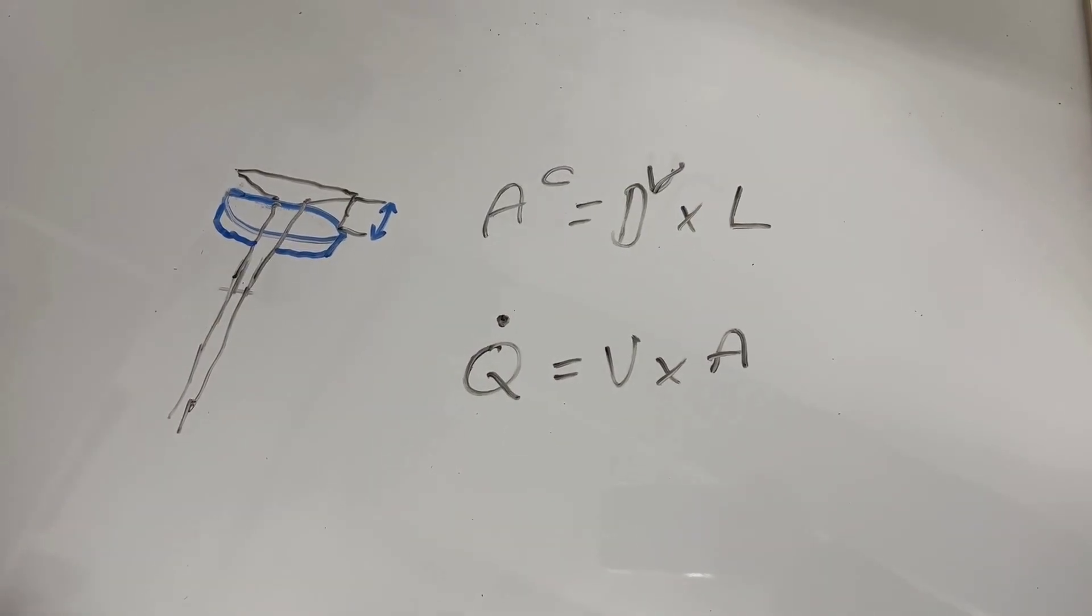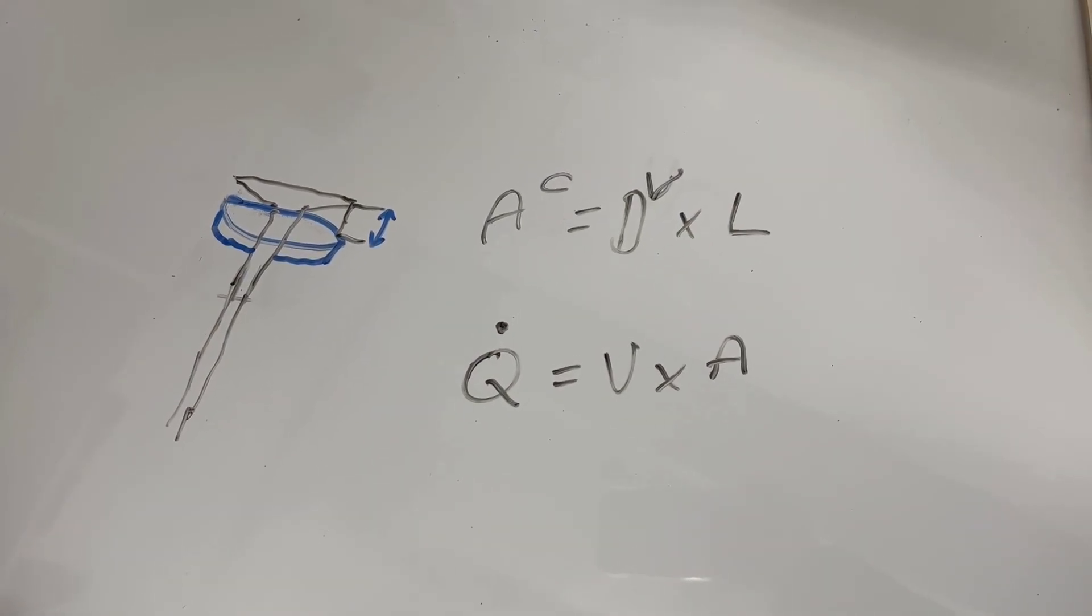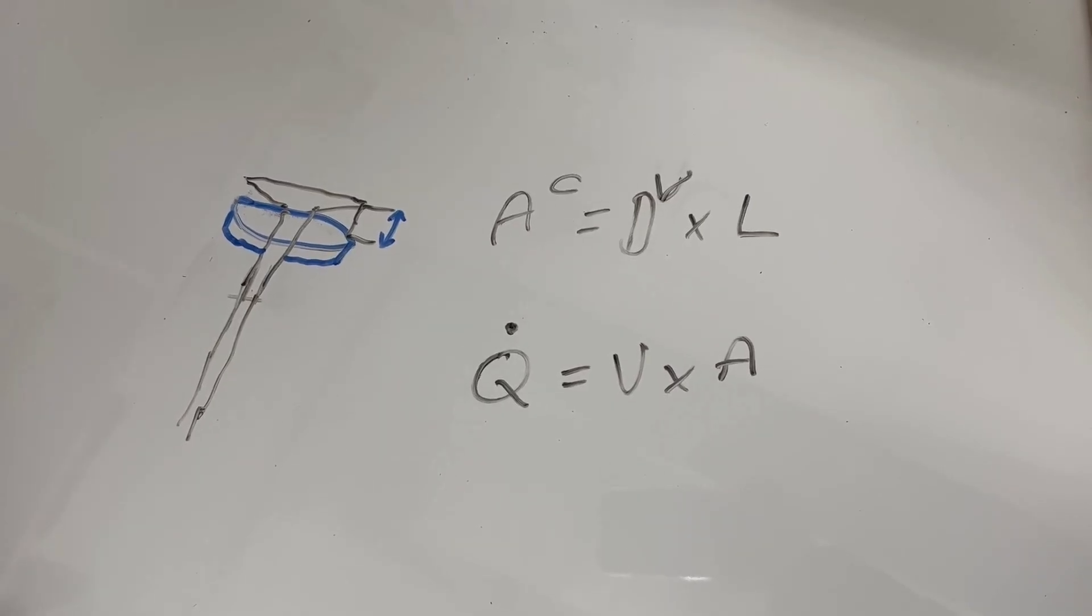So the bigger the valve, the larger the curtain area at low lift. But this isn't the only consideration.